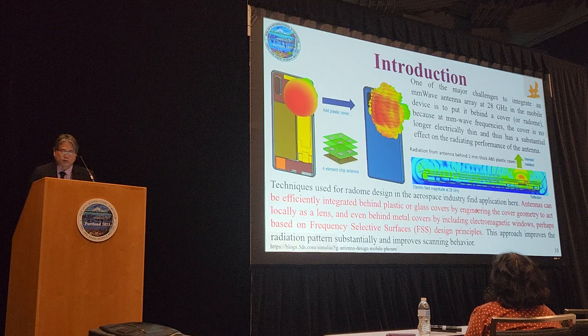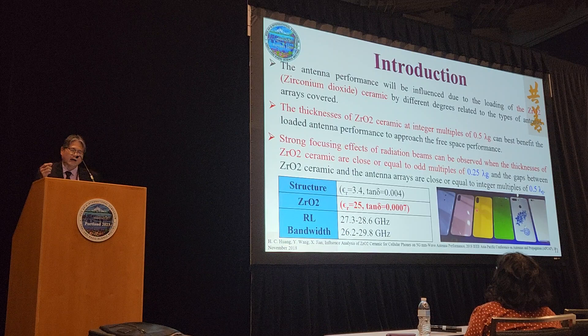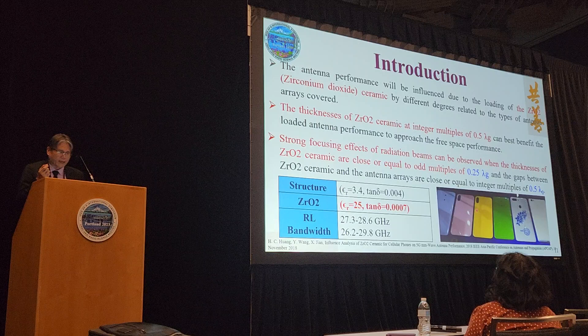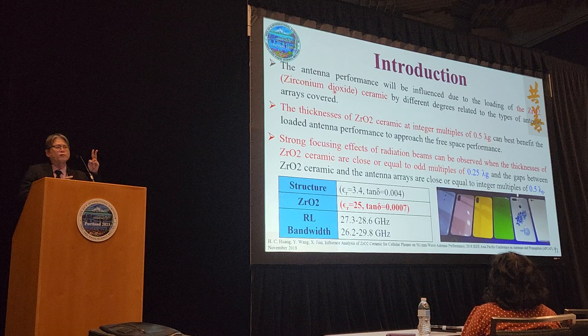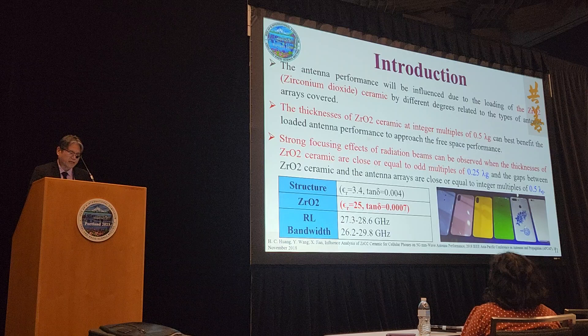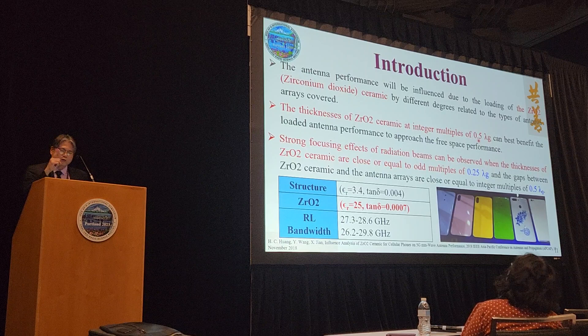Back in 2018, Dr. Huang from China working at Vivo talked about using a material known as zirconium oxide — ZrO2. He made two key statements. First, the thickness of the ceramic must be an integer multiple of 0.5 lambda g. If you can achieve that, you can get the antenna performance to approach free space performance.